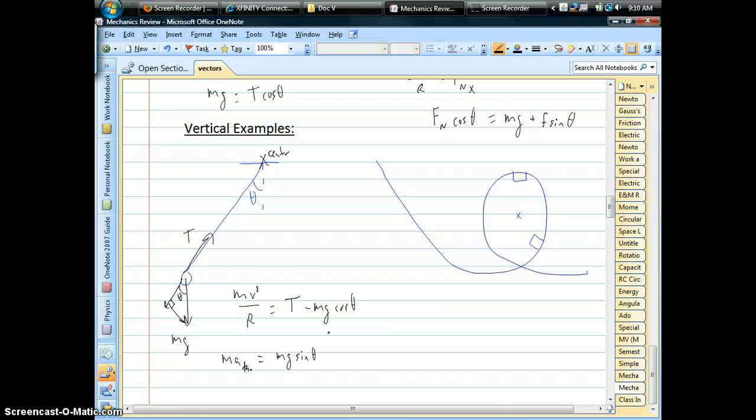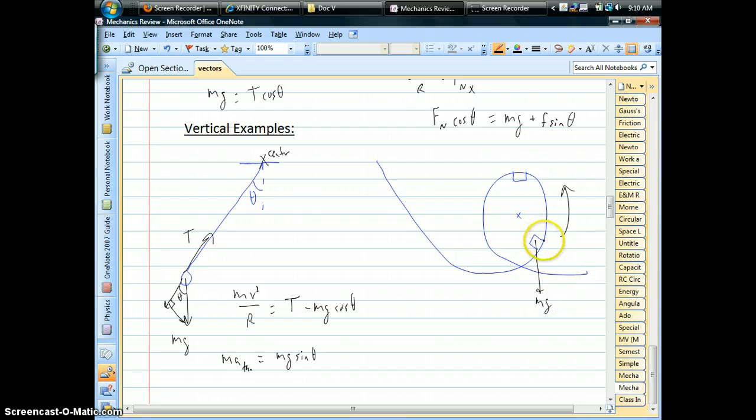Last but not least, for a vertical example, is a loop-de-loop. Notice, for this, if you're towards the bottom half of the loop, let's say you're moving upwards like that, your force diagram is, as always, is going to be gravity. You tend to ignore friction on these things. But you also have a normal force.